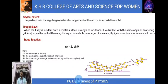Now we move on to Bragg's law. When X-rays are incident onto a crystal surface, the angle of incidence theta will reflect with the same angle of scattering theta. When the path difference d is equal to a whole number n of the wavelength lambda, constructive interference will occur. Here you can see the diagrammatical representation of Bragg's law.